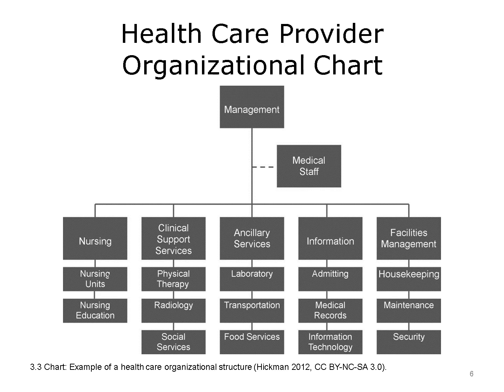Health care organizational charts can vary from this depiction. For example, the laboratory department might be part of the clinical support services division in some organizations, since a large part of the laboratory's function is directly related to patient care. As another example, information technology may be designated as a division instead of as a department under a division. Many departments have functions that cross divisions. Large providers, such as integrated delivery systems, large specialty hospitals, and academic medical centers, typically require complex organizational charts. Smaller organizations, such as small community hospitals, may use an organizational chart similar to our example. Some providers, such as independently owned ambulatory facilities, outpatient clinics, physician office practice groups, and home health agencies usually have simpler charts than the one displayed here.